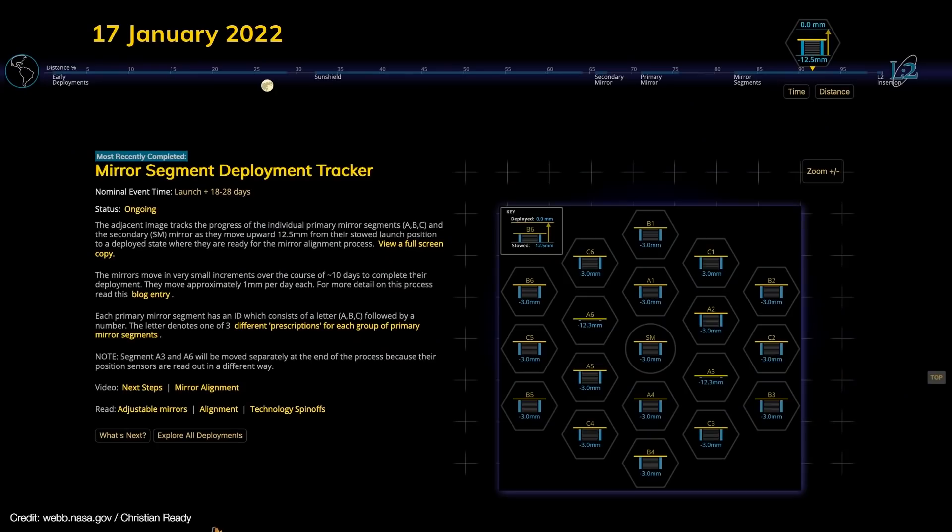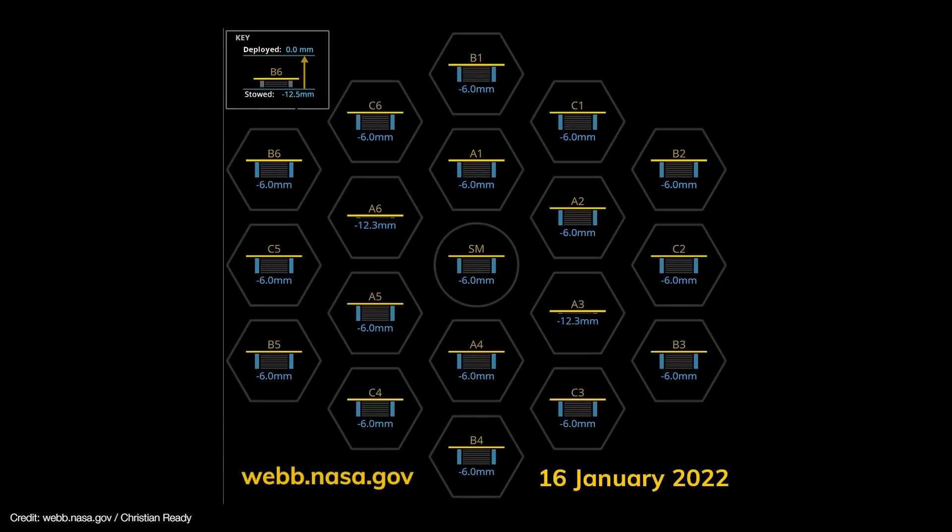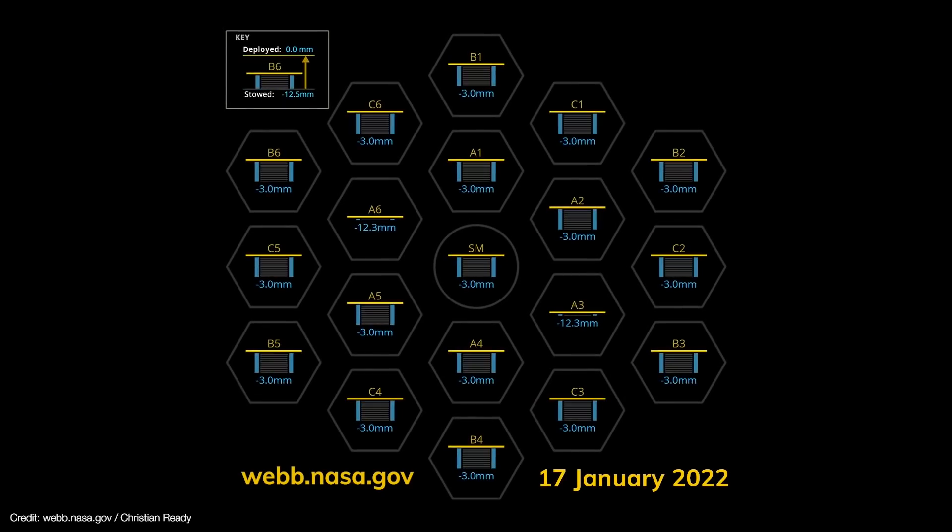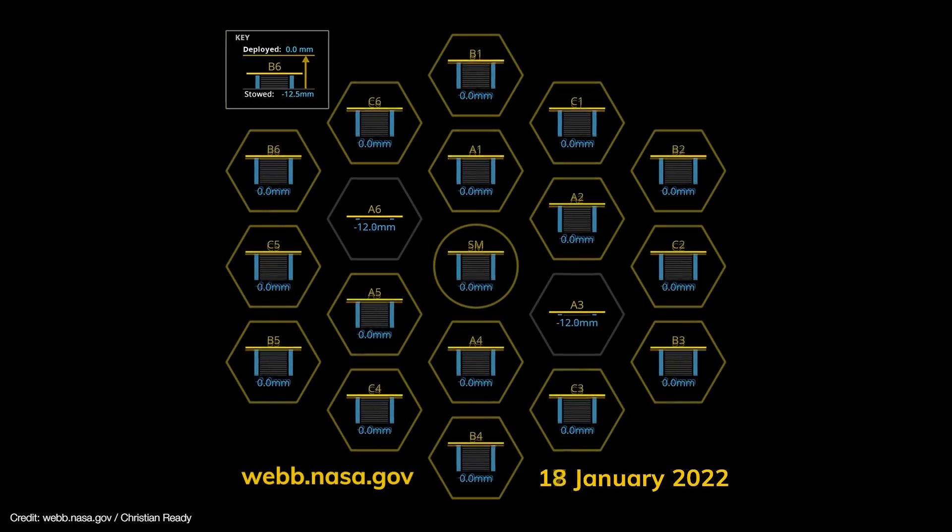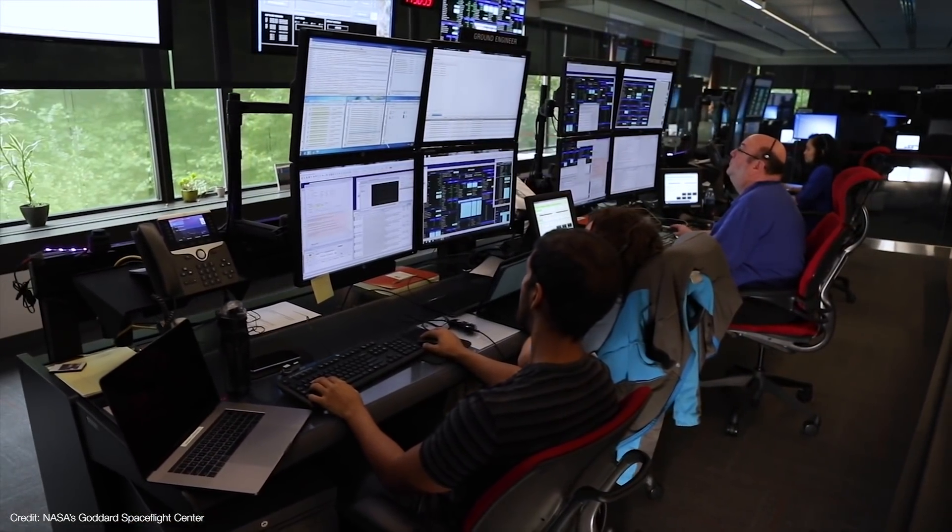But if you're still not assured, don't worry. Because the process of phasing is Webb's ultimate insurance policy. It begins by deploying the mirrors from their launch configuration. At full speed, it takes about one day to move all of the segments by just one millimeter. That's about the same speed at which grass grows. This is why this initial deployment alone takes at least 10 days to complete. But when it's finally done, the mirrors can then be phased together.